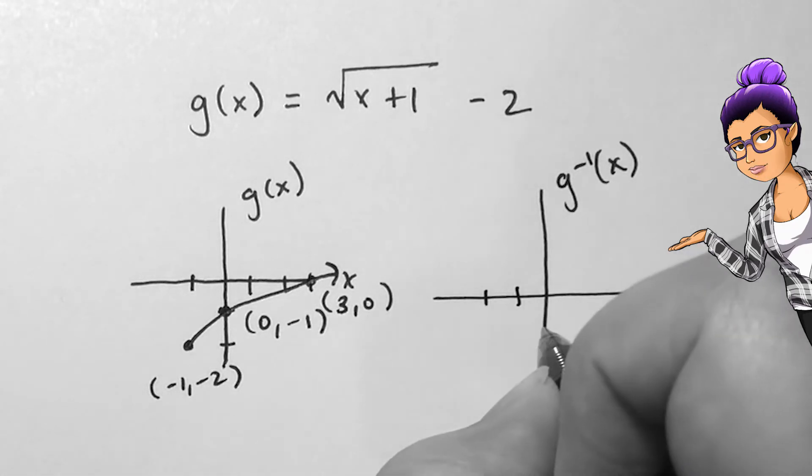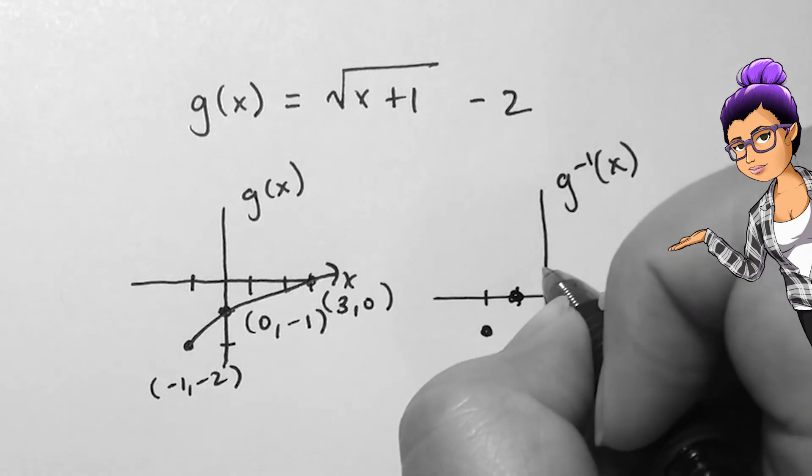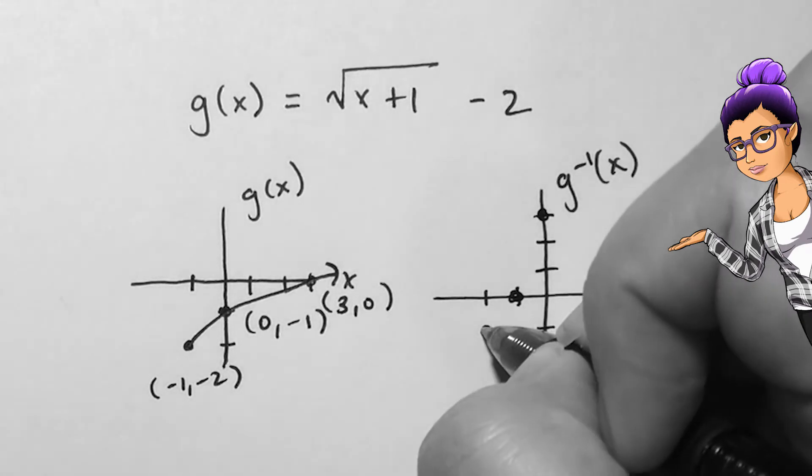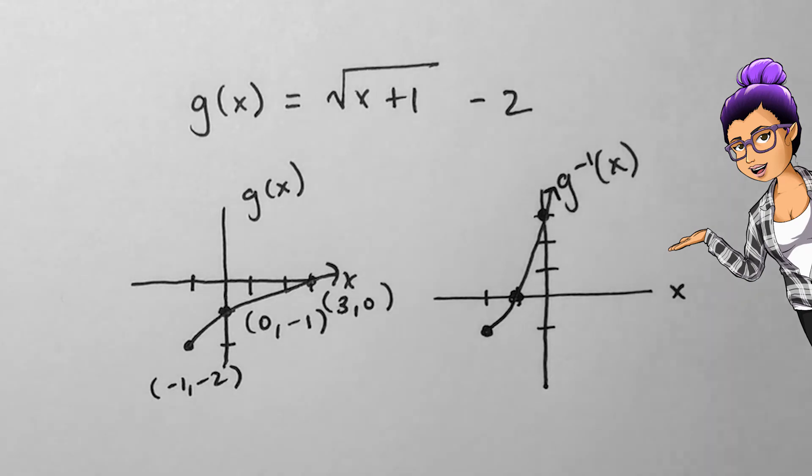I need to make sure that the ends of the graph are also the same, ending at (−2, −1) and passing through (0, 3). Notice this created half of a parabola.